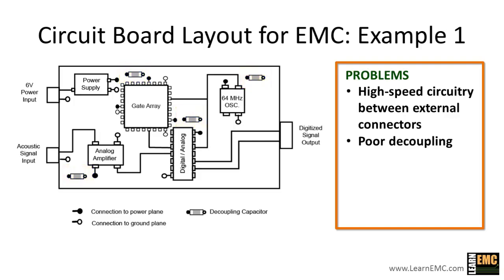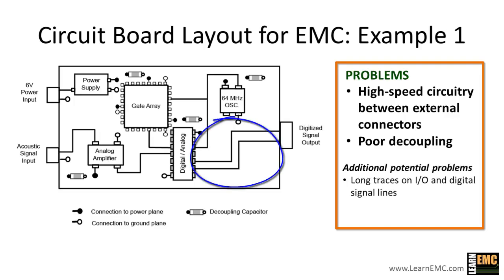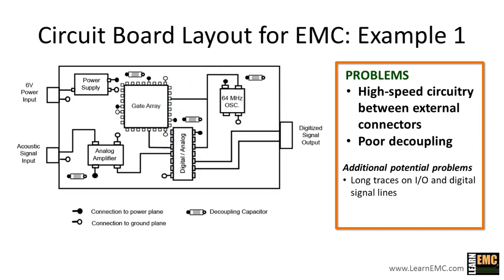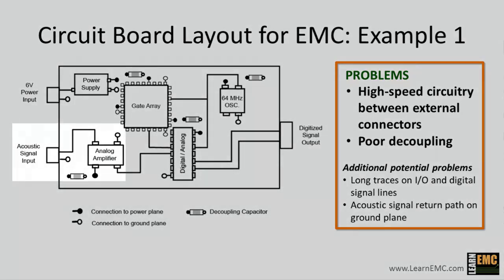In addition to these two major problems, the I/O lines bring signals too far onto the board, and other digital lines such as the clock lines are also longer than necessary. To reduce interference to these signals, we need to shorten the traces as much as possible in the new layout. One final problem is that the unamplified acoustic signal shares the same ground plane return path as the digital signals. The interference resulting from sharing a return path is especially detrimental to signals that are both low-frequency and low-amplitude, which is exactly what we have here with the unamplified acoustic signal.